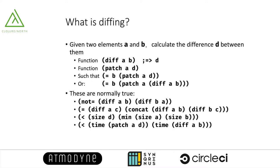Moreover, the size of the differences D is normally much smaller than either of the originals A or B, making it suitable for data storage and data transformation over networks. Finally, it is much quicker to run patch than to run diff, so data recovery from diffs is normally quick and cheap.